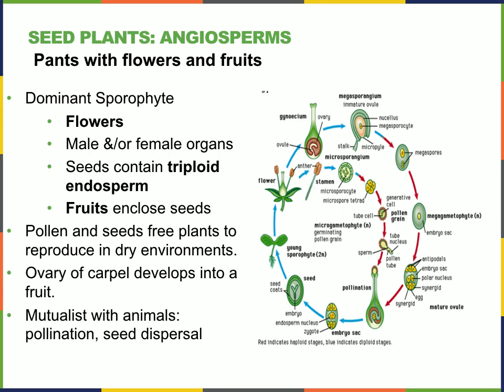Another group of seed plants are the angiosperms — plants that have flowers and fruits. The dominant form is the sporophyte, and the gametophyte occurs within the flowers. In perfect plants, both male and female organs are contained within the flower, though some plants have separate male and female flowers. Angiosperms have double fertilization, producing large seeds where the embryo forms along with the endosperm, which contains lots of food for the seed. In flowering plants, the ovary of the carpel also develops into a fruit. Pollen here is carried not just by wind, but by animals, giving the plant an efficient transport mechanism.